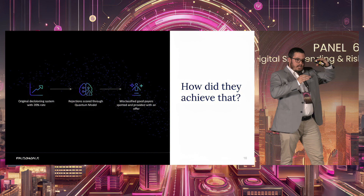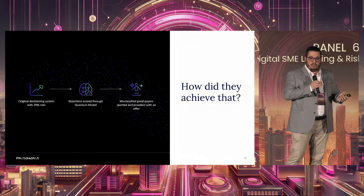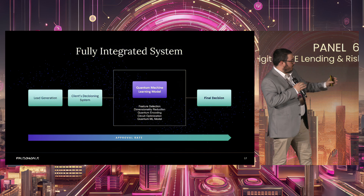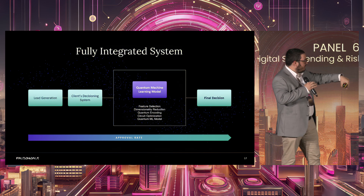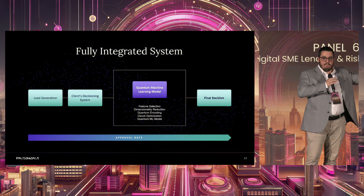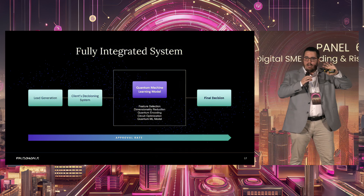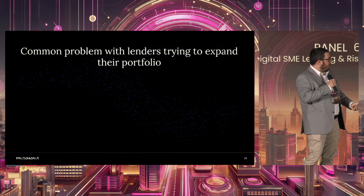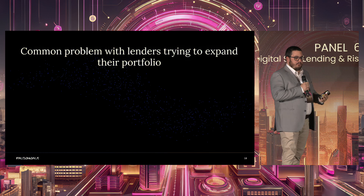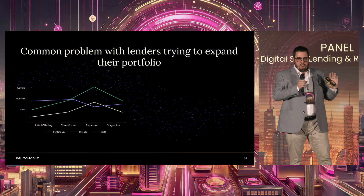These are the applicants right below the approval zone — really difficult to separate from the bad payers — and those are the ones that actually need the offer, so conversion rates improve. This became a fully integrated system: lead generation from multiple sources, then their own decisioning system, then the quantum machine learning model applying additional techniques, and then the final decision. You rescue these applicants from being left out of the process because they were actually good payers.